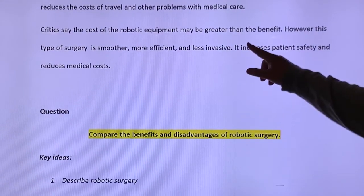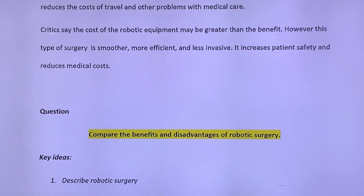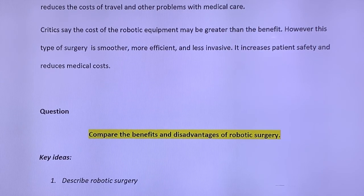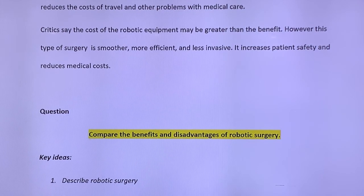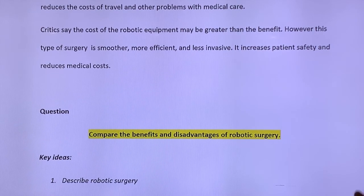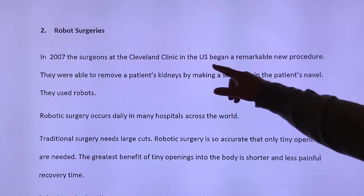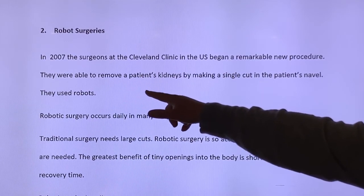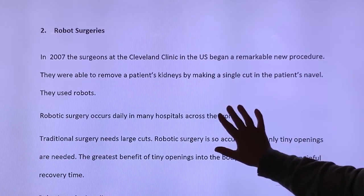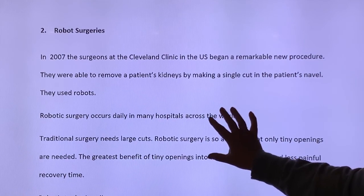Critics say, get ready for some negatives if they're criticizing. Critics say the cost of the robotic equipment may be greater than the benefit. However, the type of surgery is smoother, more efficient and less invasive. It increases patient safety and reduces medical costs. Already, which way should your decision for this go? It's really got to go for, hasn't it? It's a funny one that often in science will pose ones that really you can argue either side. But do you think I would be happy if you argued negative for this? Not really, because so far the only negative is what? It costs more money. So obviously for some places, if that's going to be a limiting factor. But realistically, if I go back to my other things, the first thing, this is done by the Cleveland Clinic, which will be a hospital of some sort by surgeons. Good information? Good information.